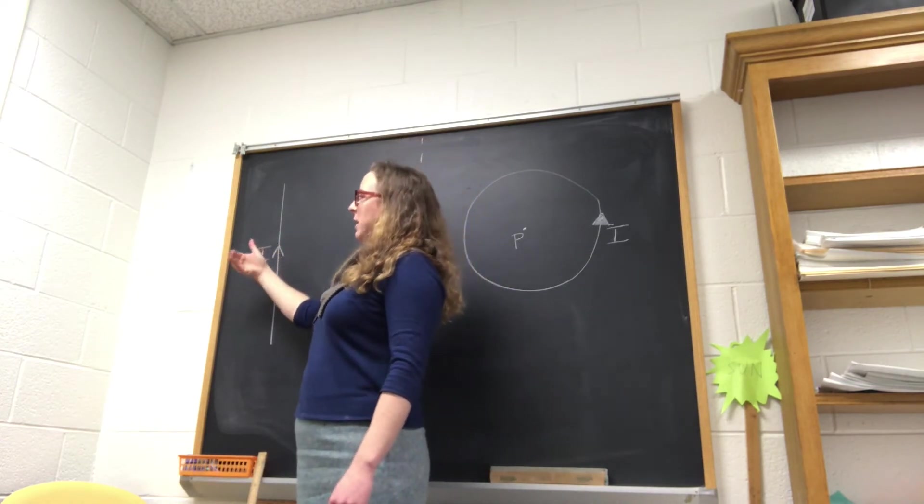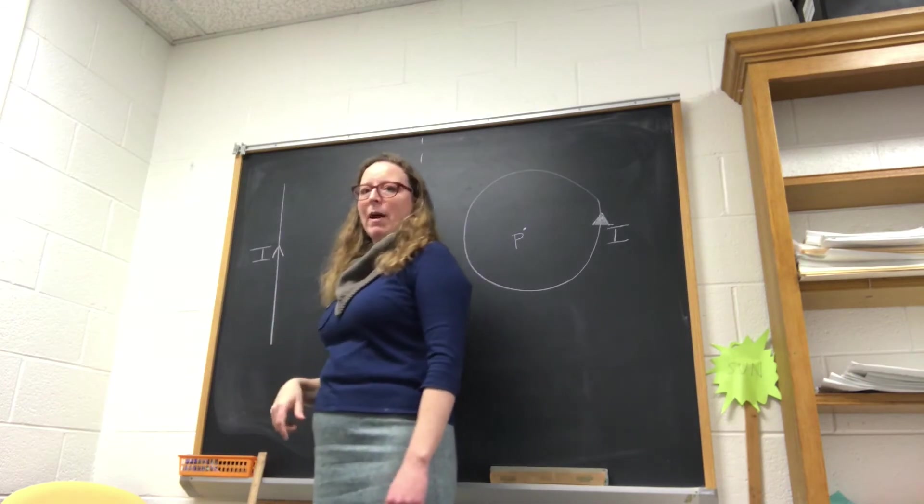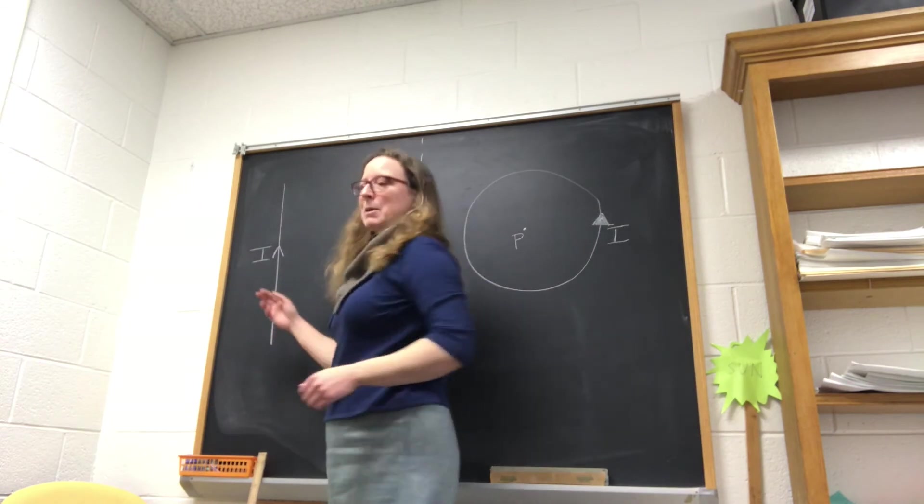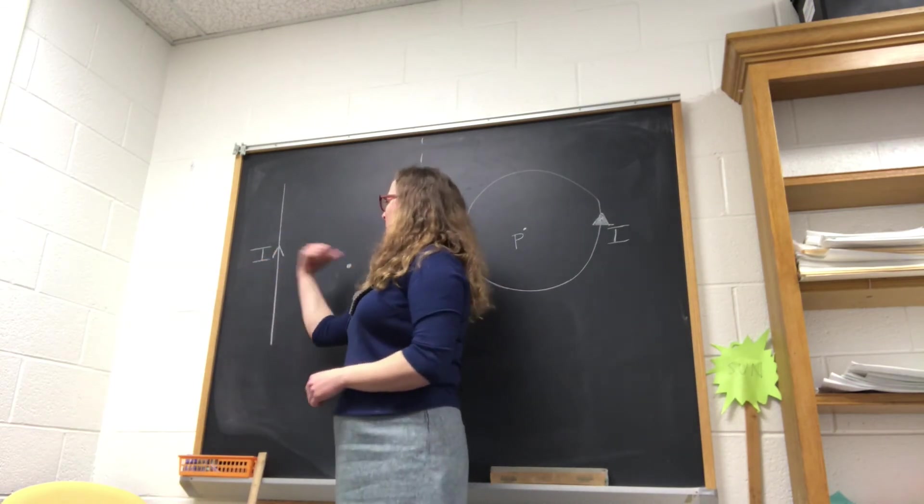So again, curly straight tells me the direction that it's going around the wire. And since it's going around the wire, at a point over here it's going to be coming out of the board, and at a point over here,